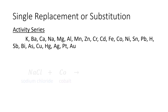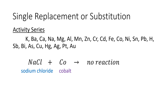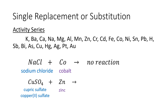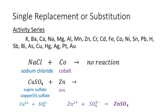For sodium chloride and cobalt, no reaction will occur because cobalt is less reactive than sodium, making it impossible for cobalt to replace sodium. For cupric sulfate, or copper sulfate, reacting with zinc, the reaction will occur because zinc is more reactive than copper. Cupric sulfate is formed from copper with a charge of 2+ and sulfate with a charge of 2-. Since zinc can replace copper, zinc combines with SO4 to produce zinc sulfate and copper.